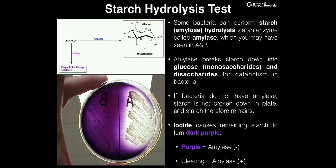On the left side B, this is the side where starch is remaining because all of it turns this dark purple color. That means the bacteria on the left side B do not produce amylase, because if they did, they'd be breaking the starch down. Since they don't produce amylase, the starch remains and turns dark purple. Therefore, because of this purple color change, we would say these bacteria are amylase negative.